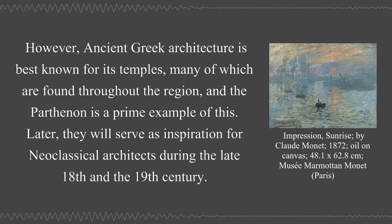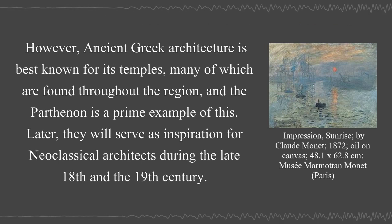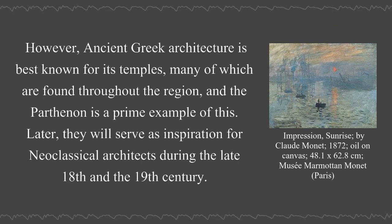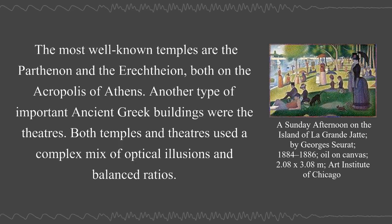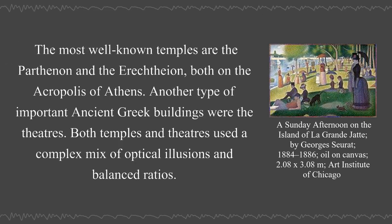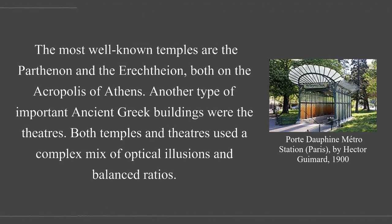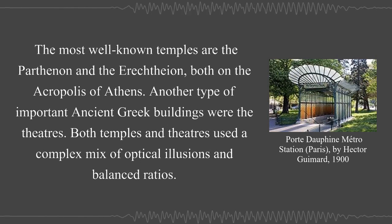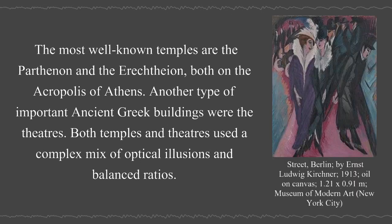Ancient Greek architecture is best known for its temples, many of which are found throughout the region, and the Parthenon is a prime example. They will later serve as inspiration for neoclassical architects during the late 18th and 19th century. The most well-known temples are the Parthenon and the Erechtheion, both on the Acropolis of Athens. Another type of important ancient Greek buildings were the theaters. Both temples and theaters used a complex mix of optical illusions and balanced ratios.